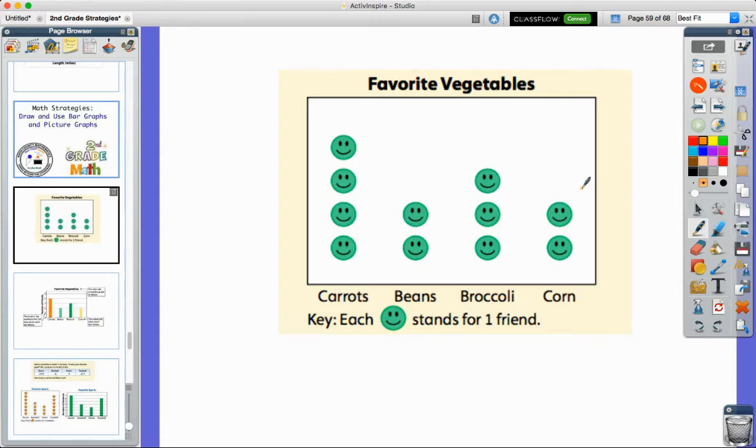So each one of these represents a person in this example. So if I ask you how many people we talk to all together, I would need to add up all of the smiley faces. So I've got four, five, six, seven, eight, nine, ten, eleven. So we talk to a total of 11 friends. That is a picture graph because they use pictures here. They use smiley faces to help us understand the data.